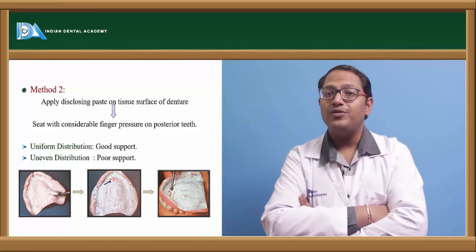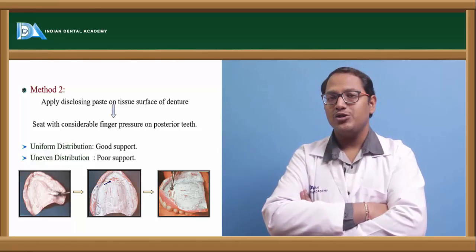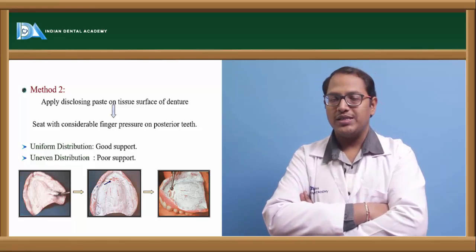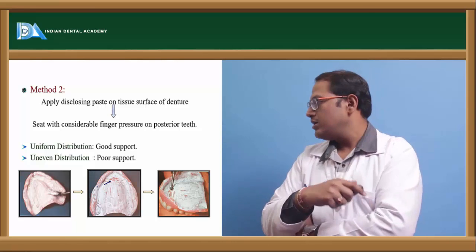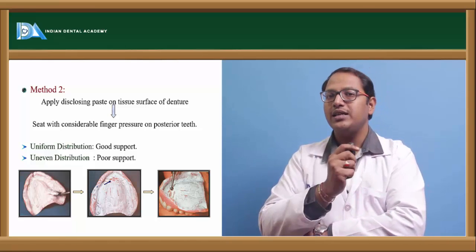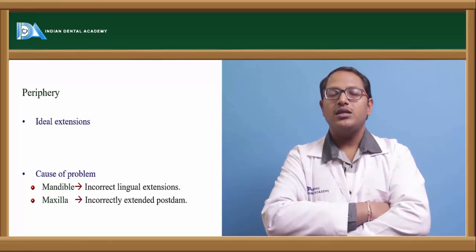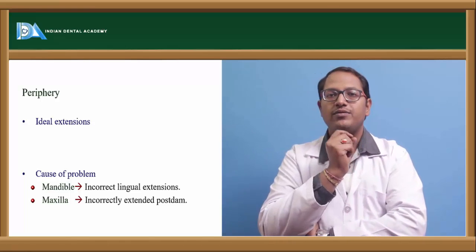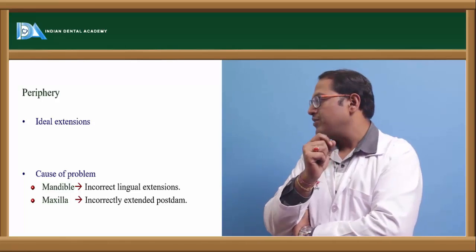The second method uses disclosing paste — either an all-white paste or zinc oxide eugenol paste. Zinc oxide eugenol has a reactor and an activator. With this paste applied on the intaglio surface, you can find out if any area is causing problems and abusing tissue. If there is uniform distribution, it is good; if there is uneven distribution, the area with excess material is hurting the patient.